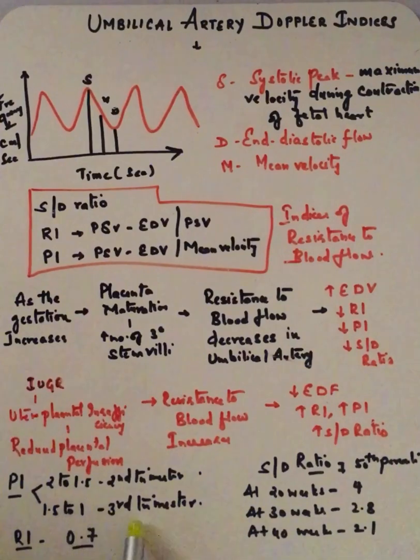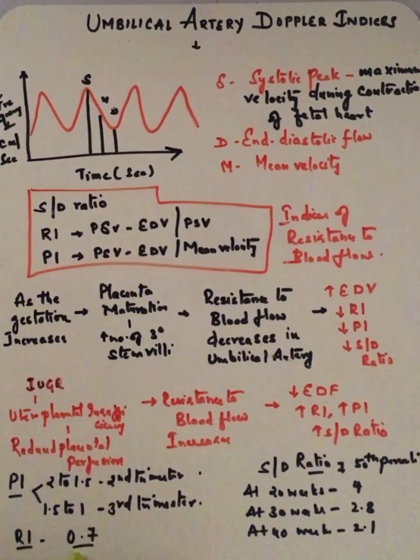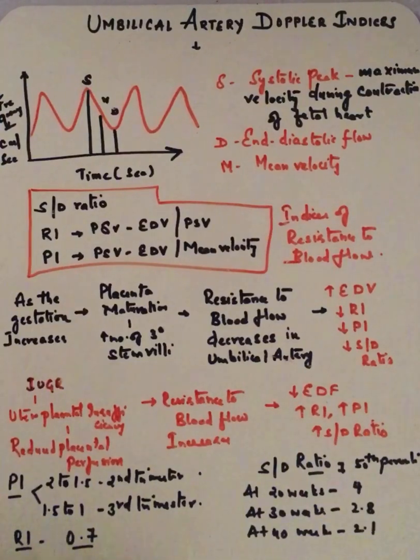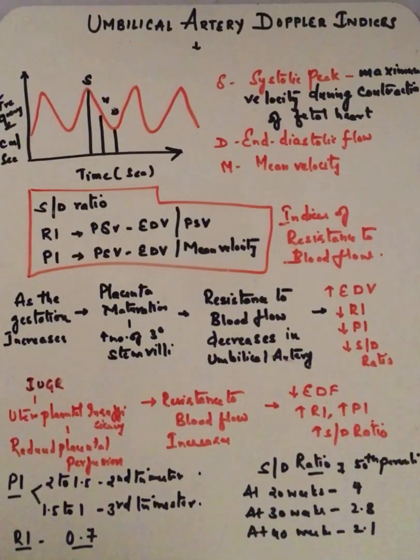And RI is 0.7. Just remember that RI more than 0.7 will be abnormal after 26 weeks. If the RI is more than 0.8, it's always abnormal at any gestational age.